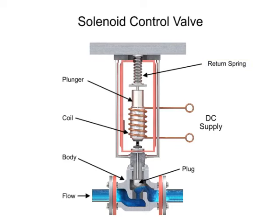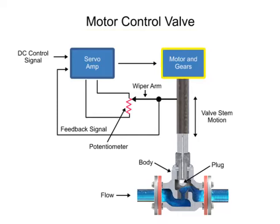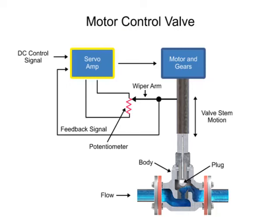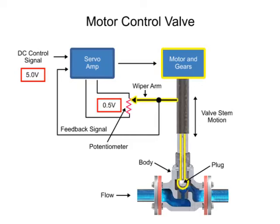Another method for variable valve positioning uses a motor and is referred to as proportional control mode. Using a gear motor attached to the valve stem, a servo amplifier provides a DC control signal that moves the valve to the desired position. Feedback is achieved with a wiper arm attached to the valve stem that sends a signal back to the servo amplifier where the position is monitored. The servo amplifier drives the motor until the control signal is equal to the feedback signal.